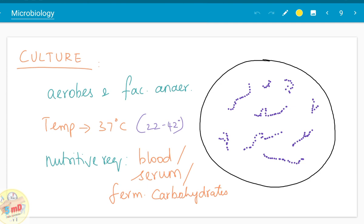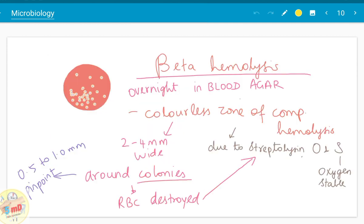In culture, the aerobes and facultative anaerobic nature of the bacteria we have already seen. The ideal temperature is 37 degrees Celsius. The range varies from 22 to 42 degrees Celsius. Nutritive requirement includes either blood, serum, or fermentable carbohydrates. Blood agar, sheep blood agar is ideal because the hemolytic property of the bacteria can be demonstrated in blood agar only.